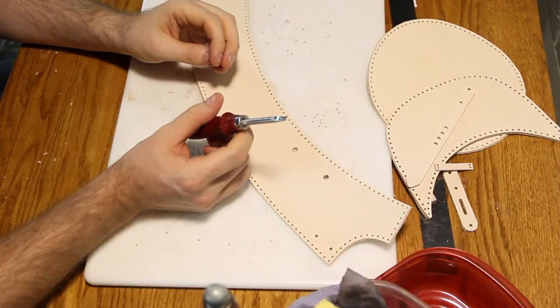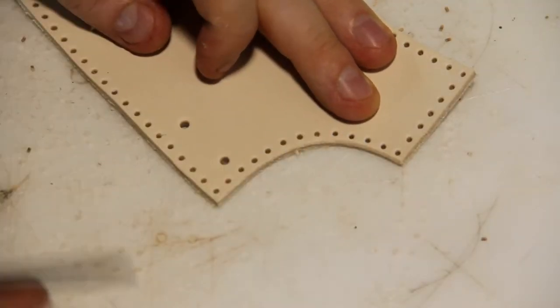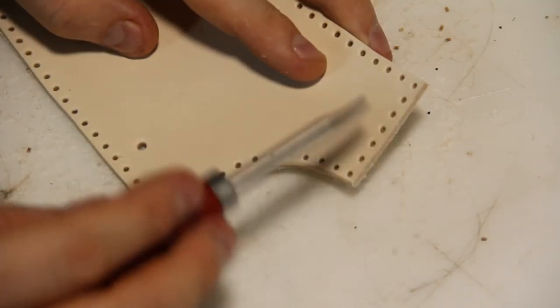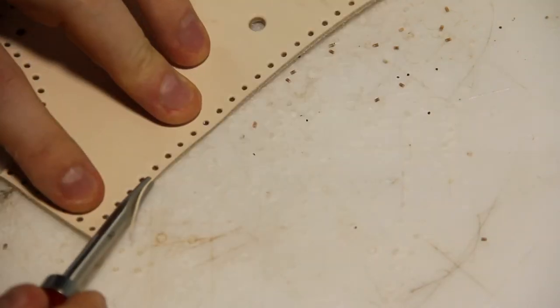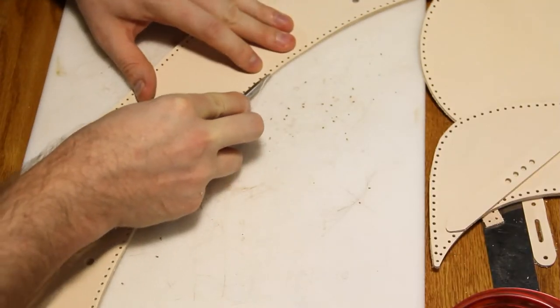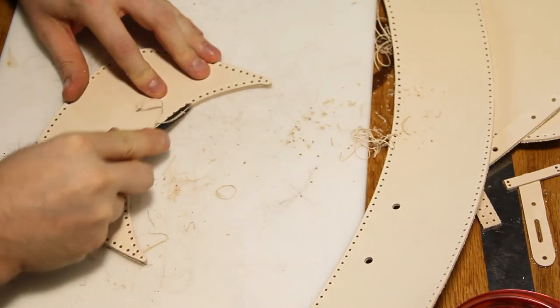Next, you're going to want to bevel all your edges. Here, I'm using a size two beveler. This edge right here, I would skip because you're going to butt this end up with the other side, this way it's flush. On the visor, I used a larger bevel, this one's about a five.